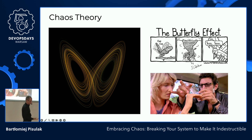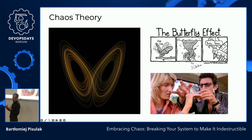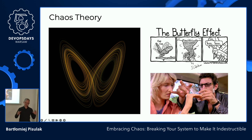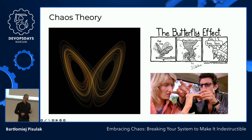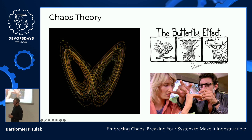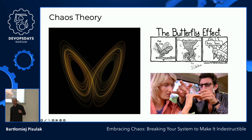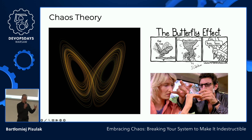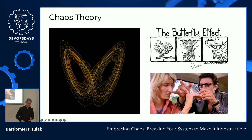Why are we talking about chaos theory? We're supposed to be talking about chaos engineering. The reason is simple: IT systems, especially distributed systems, are chaotic systems. Think about a distributed system using microservices — you have so many conditions that a very small change in latency can cause disruption for the whole system or change its behavior. And this is not only about technical stuff — it's also about people and the influence of people on the code they write. If you didn't sleep well and wrote code with a bug, it's going to affect the whole system.